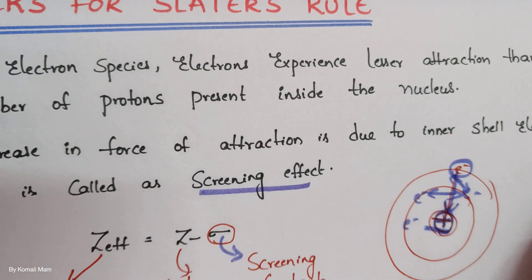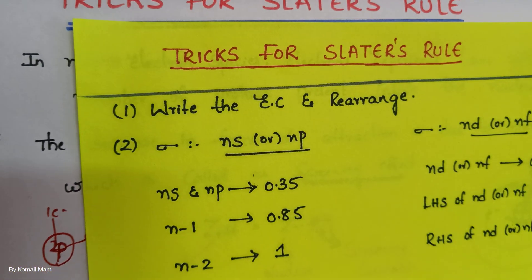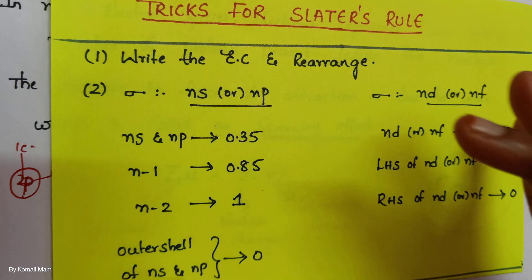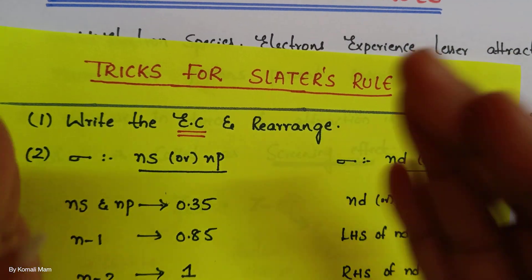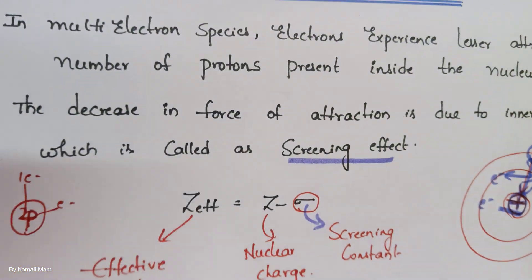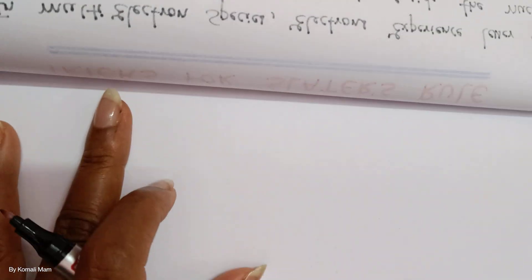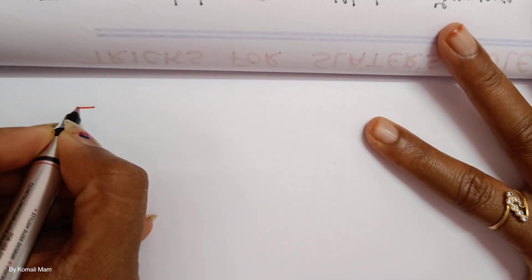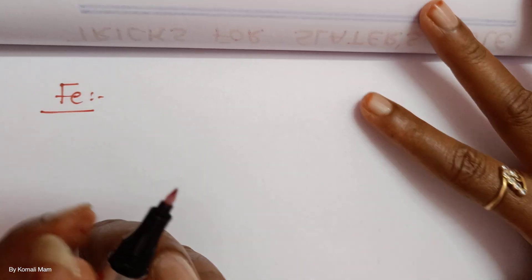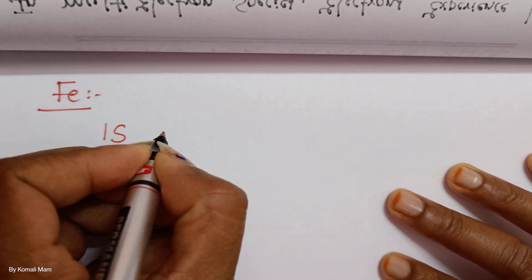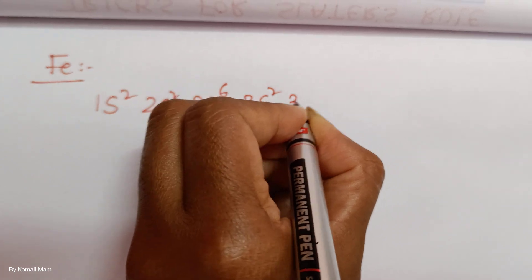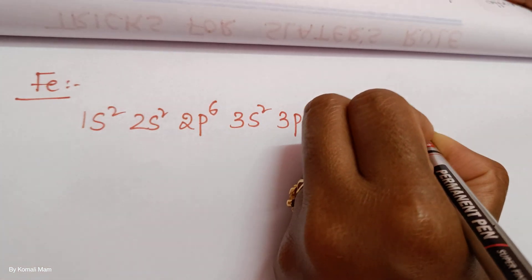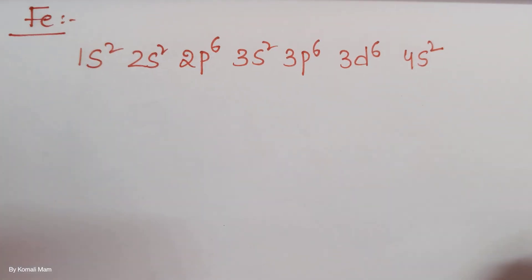Now I am going to tell you Slater's rule — what rules Slater gave, in an easy way. First, you should write the electronic configuration and rearrange it. For example, for iron, the electronic configuration is: 1s², 2s², 2p⁶, 3s², 3p⁶, 3d⁶, 4s². You should know electronic configurations, then only you can do it.